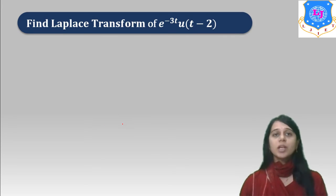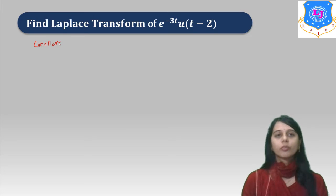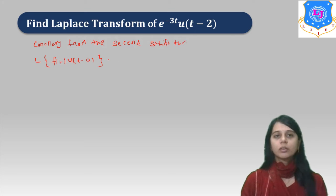Now, find the Laplace transform of e raised to minus 3t times u(t minus 2). There is one corollary from the Second Shift Theorem. The corollary states that Laplace of f(t) times u(t minus a) equals e raised to minus as times Laplace of f(t plus a).